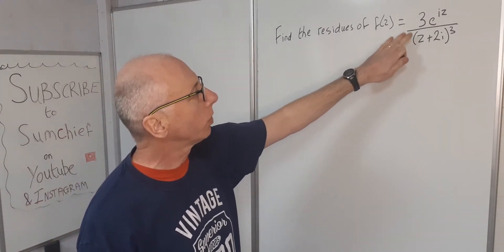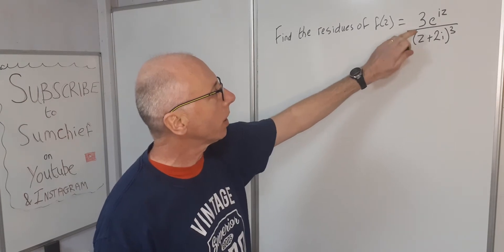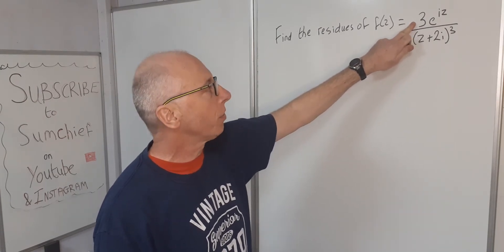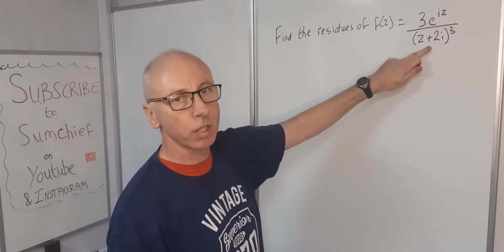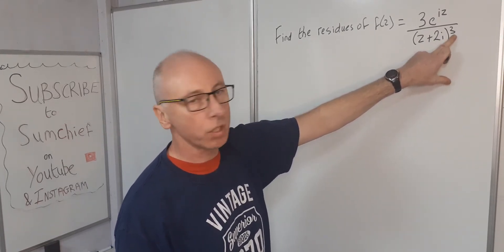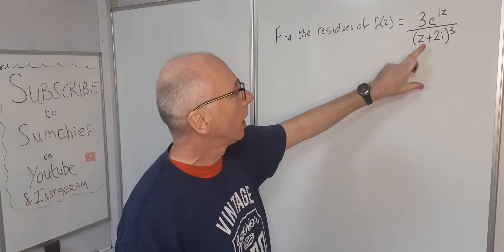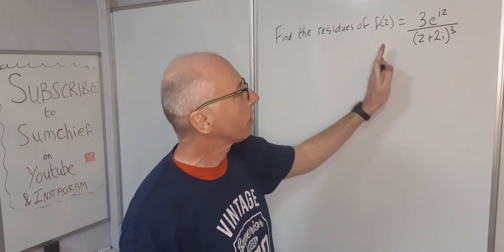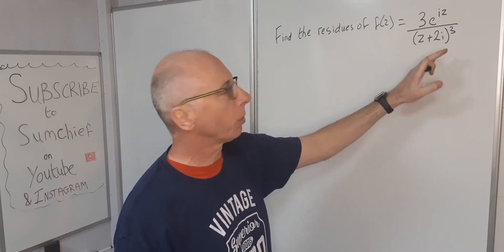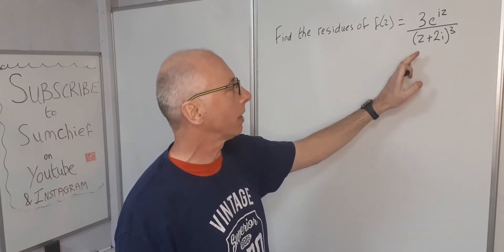Just have a little scout around the function to see what you can see. The numerator 3e^(iz), no problem, that's fine. Denominator looks a little bit troublesome. We've got this cubed power which could make things difficult. Now one thing not to do is to foil this out. That's not going to work, that's going to make things way too complicated.